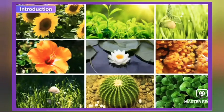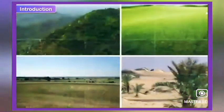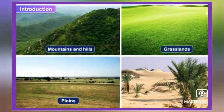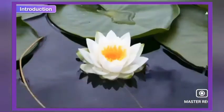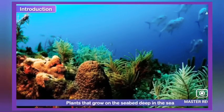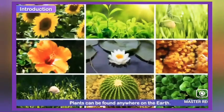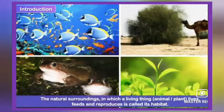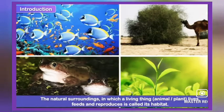Our environment is full of wonderful plants growing in different places — mountains and hills, grasslands and plains, even deserts. Did you know that there are some plants that grow on the surface of lakes while some others grow on the seabed deep in the sea? In other words, plants can be found anywhere on the earth. The natural surroundings in which a living thing — animal or plant — lives, feeds and reproduces is called its habitat.